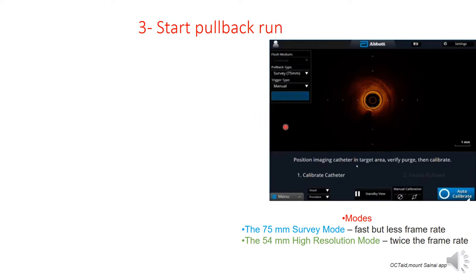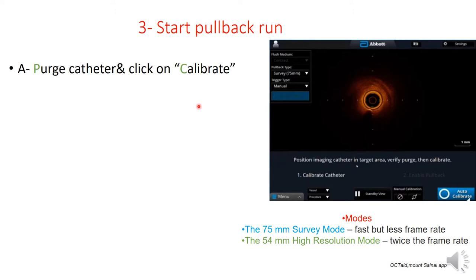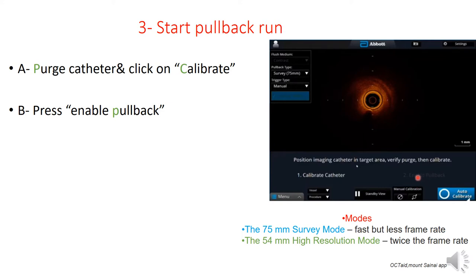This is the image that appears after entering patient data. You have two modes: the survey mode, which can survey up to 75 mm in length but comes at the expense of a lower frame rate, or the 50 mm high-resolution mode which has twice the frame rate of the survey mode. Then flush the side arm of the catheter with contrast to avoid any blood in the lumen of the catheter that may cause light attenuation and a blurred picture. Then click to calibrate the catheter, and next push the button to enable pullback — either manual or automated, though we usually use automated pullback.